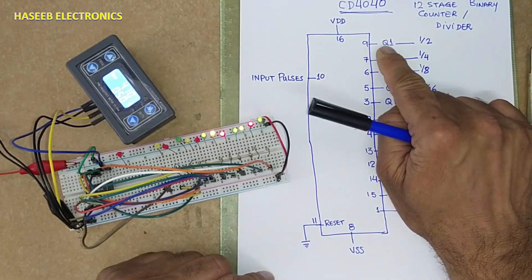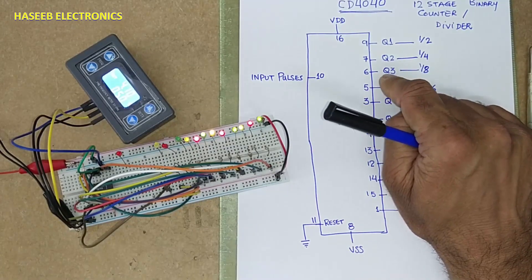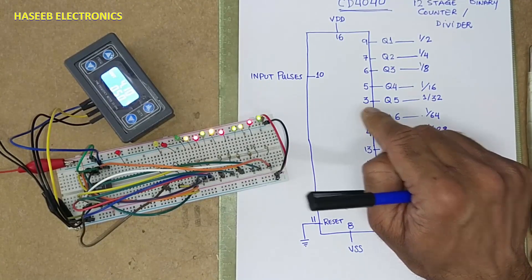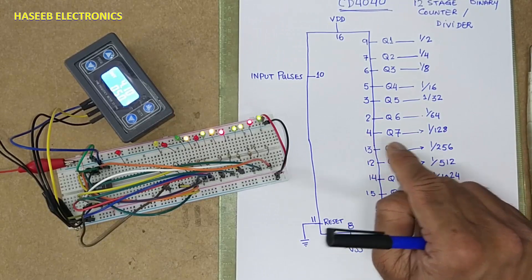Pin number nine, first output. Pin number seven, second output. Pin number six, third output. Pin number five, fourth. Pin number three, fifth output. Pin number two, sixth output. Pin number four, seven.